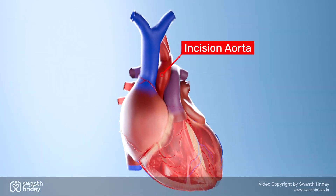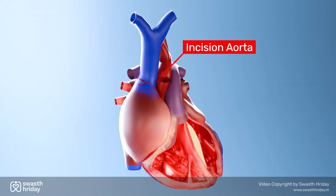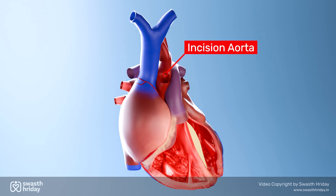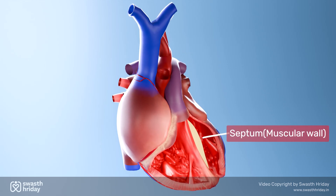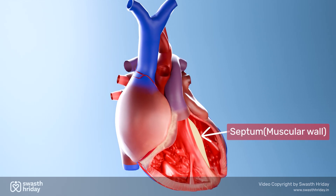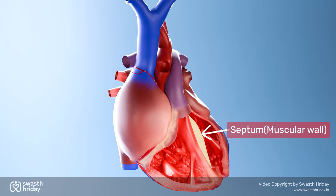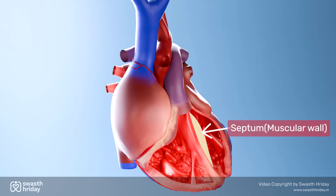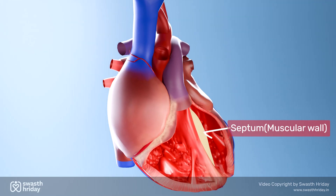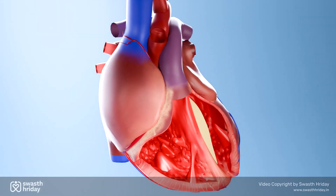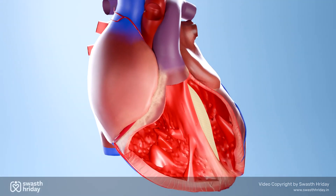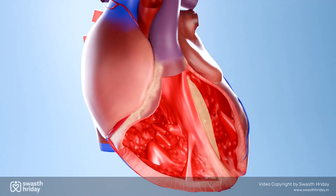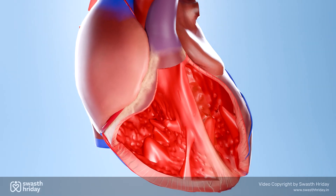A small incision is made in the aorta to access the aortic valve and the thickened septal muscle beneath it. Using precise surgical instruments, the surgeon carefully removes the excess muscle to widen the passage for blood flow.